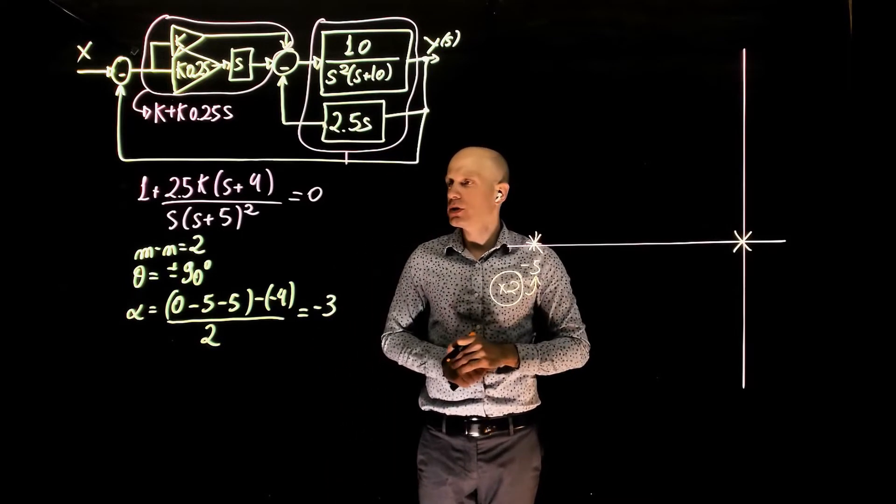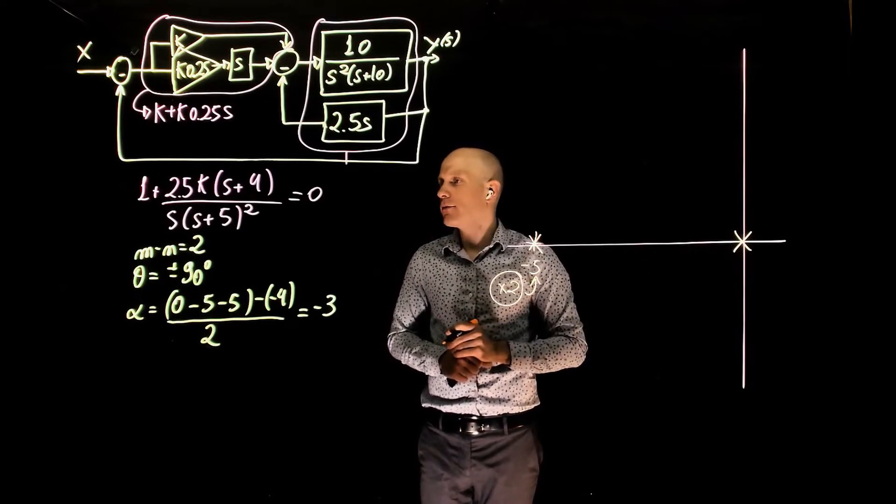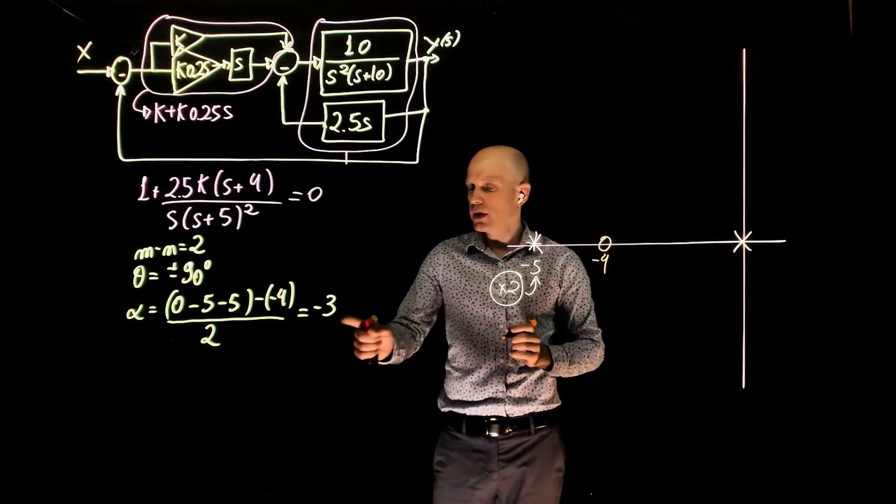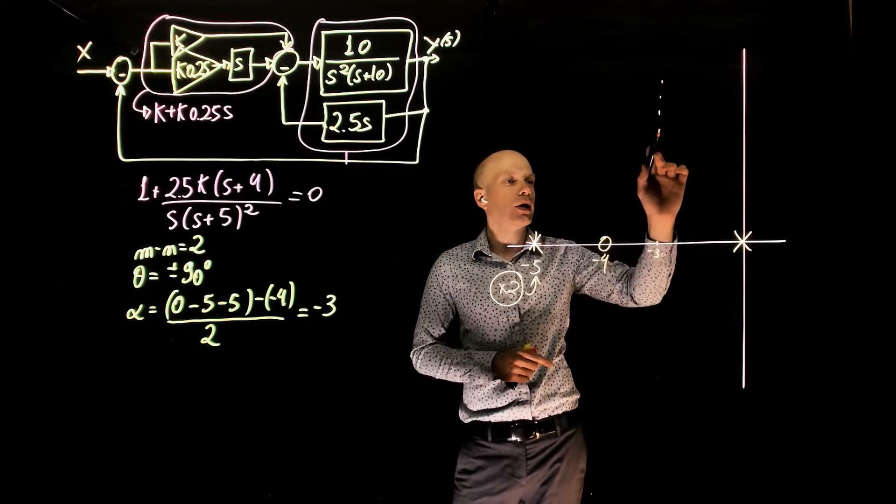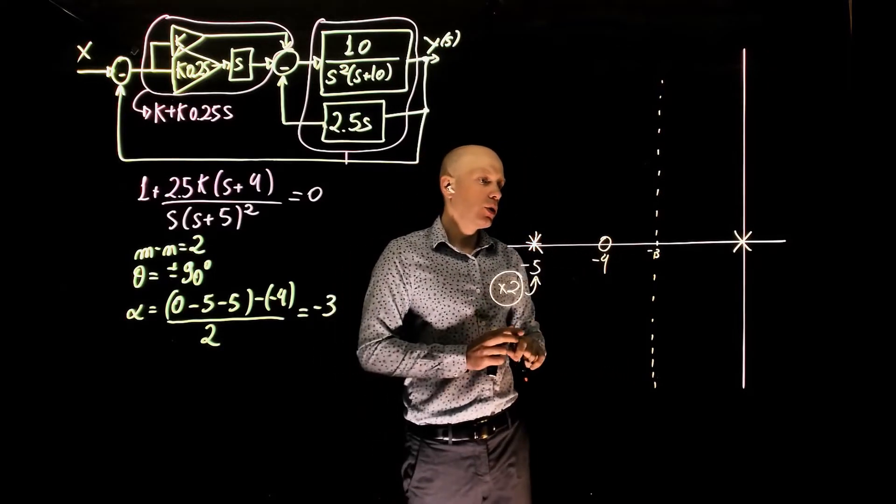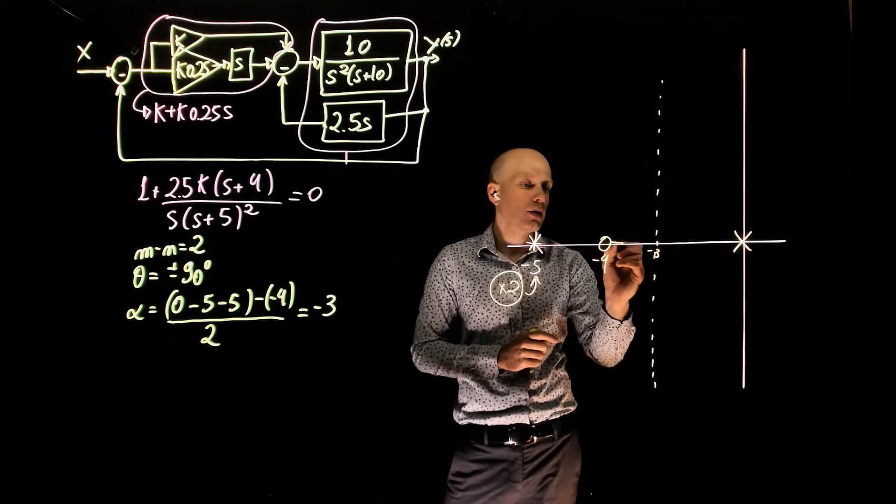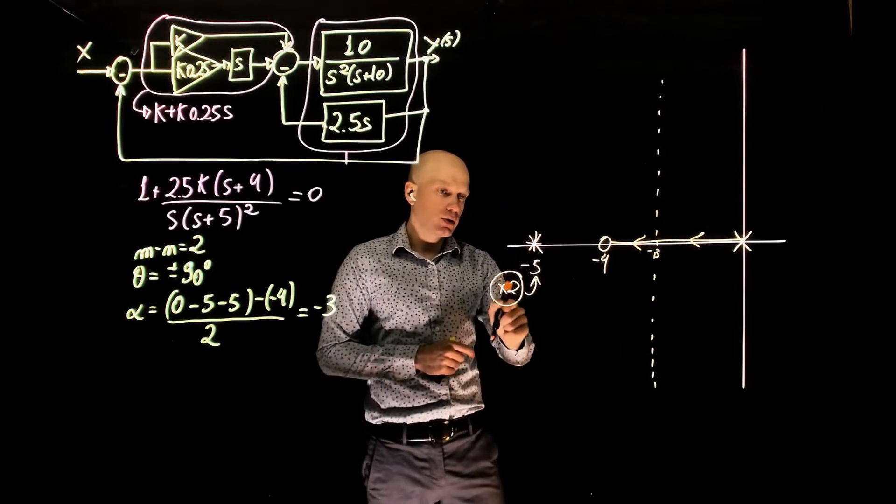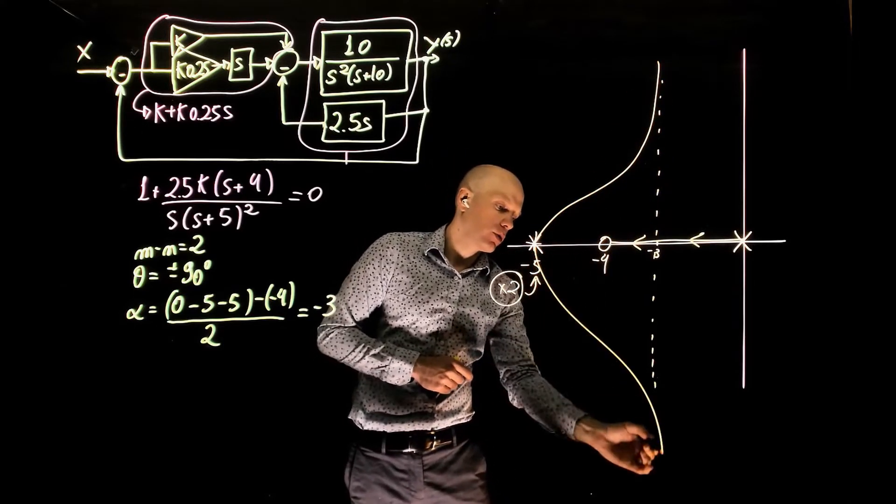Now we can start placing poles and zeros on the s-plane. We have a pole at 0 and we have 2 poles at negative 5. We also have a zero at negative 4. The centroid of the asymptotes are at negative 3, and the angle of these asymptotes are 90 degrees and negative 90 degrees. The root locus is to the left of a number of poles and zeros, which means that this pole and this zero have a match. The pole goes to the zero. And these two poles now use the asymptotes. One goes up, the other one goes down.